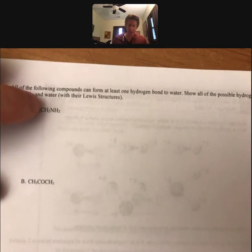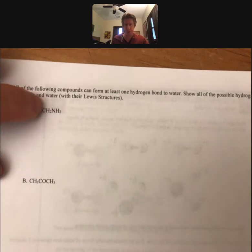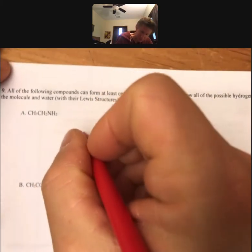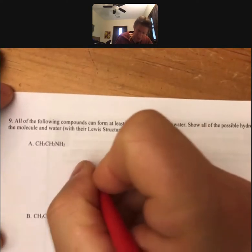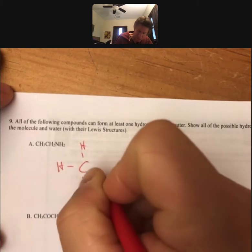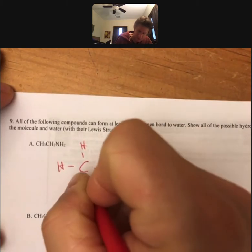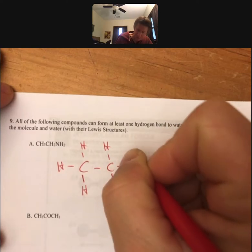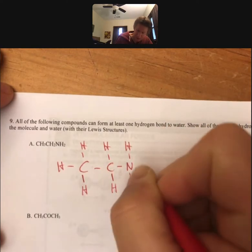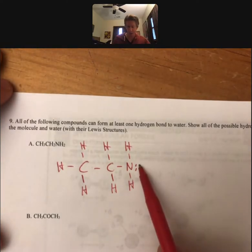Now let's do another nitrogen. I'm going to draw the Lewis structure for this molecule. It's going to have a CH3, so I'll put the H, the H, and the H. Then it's going to have a CH2, and it's going to have an NH2 there with a pair of electrons.